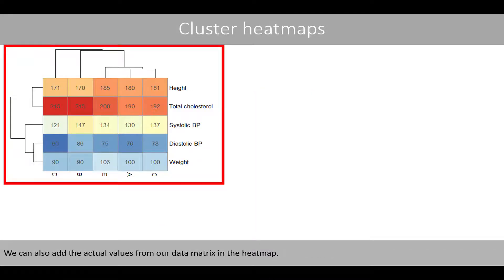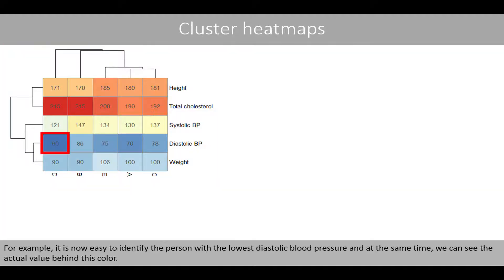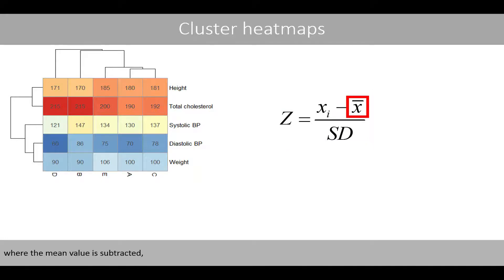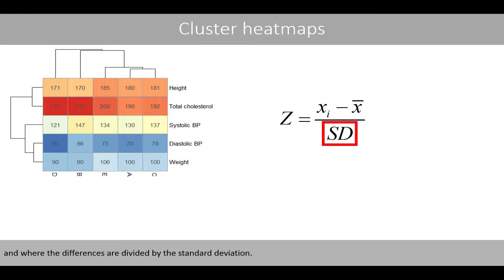We can also add the actual values from our data matrix in the heatmap. It is now easy to identify the person with the lowest diastolic blood pressure, and at the same time we see the actual value behind this color. However, it is more common that the values in the heatmap represent standardized values, where the mean value is subtracted from all the relevant values, and where the differences are divided by the standard deviation.